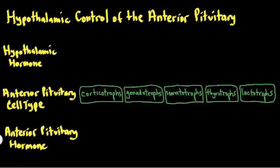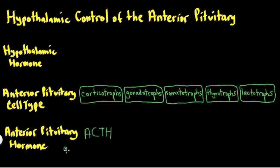Looking at the first anterior pituitary hormones released from these cell types, we start with the corticotrophs. Like the name implies, they're going to be releasing a hormone that stimulates the adrenal cortex, which is the outer three layers of the adrenal gland. This hormone is called ACTH, which stands for adrenocorticotropin hormone, because it stimulates the adrenal cortex.